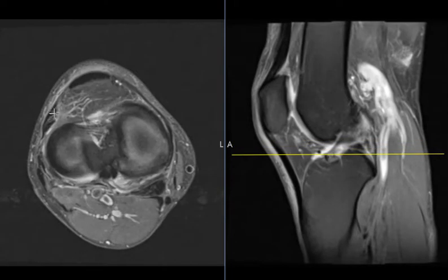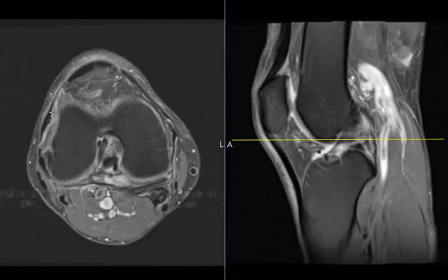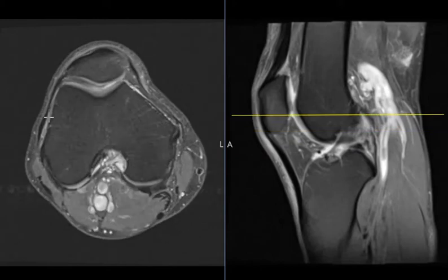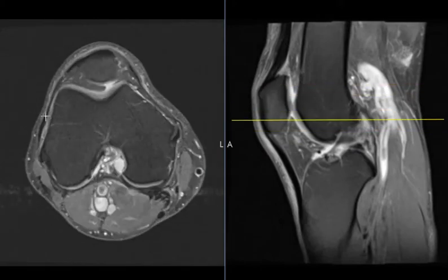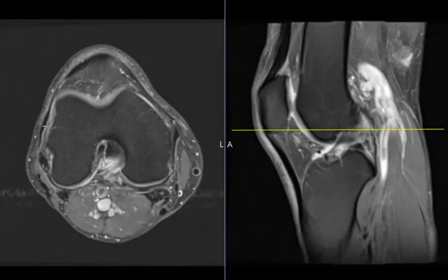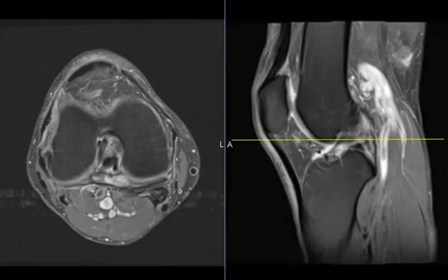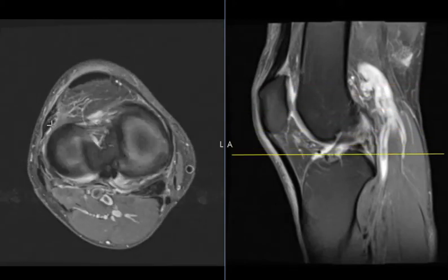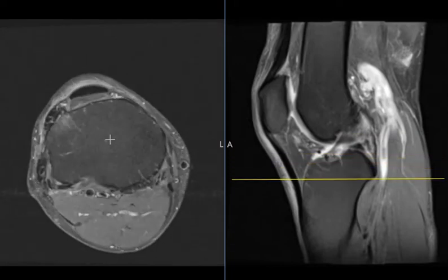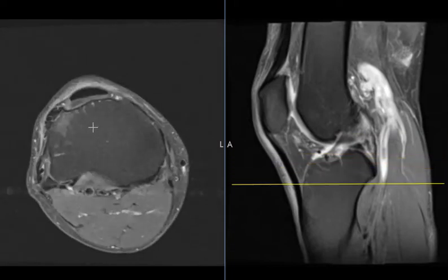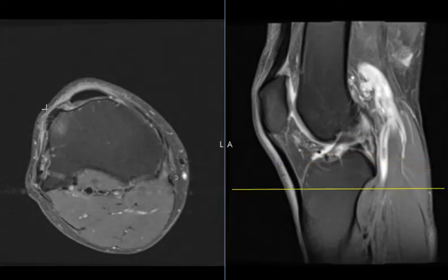We see another structure right over here — this is the iliotibial band that comes down the lateral side. It goes along the edge of the femur here and attaches down on the tibia, which is below the knee joint.